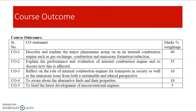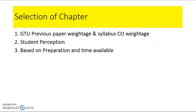CO1 has 40% weightage, CO2 is 35%, CO3 is 10%, CO4 is 10%, and CO5 is 5%. We know that Course Outcome 1 is mapped with different chapters, and according to this weightage we need to prepare those chapters. The question arises: how to select chapters and in which sequence to prepare for GTU to gain good marks with less effort. I have listed three points on which we need to select the chapters: GTU previous paper weightage as well as the new curriculum CO weightage.